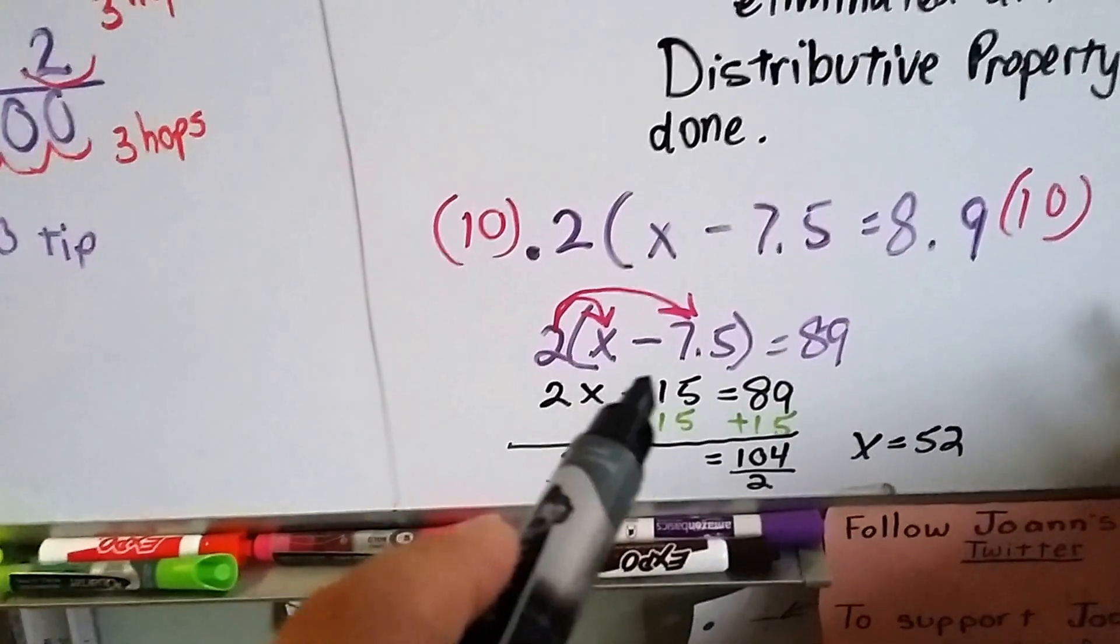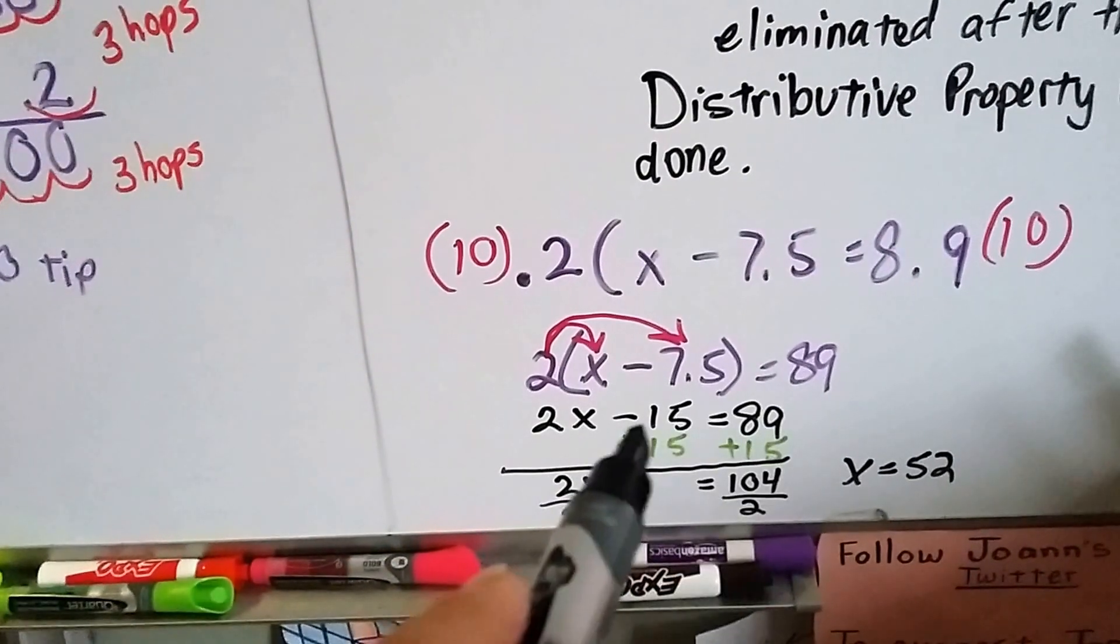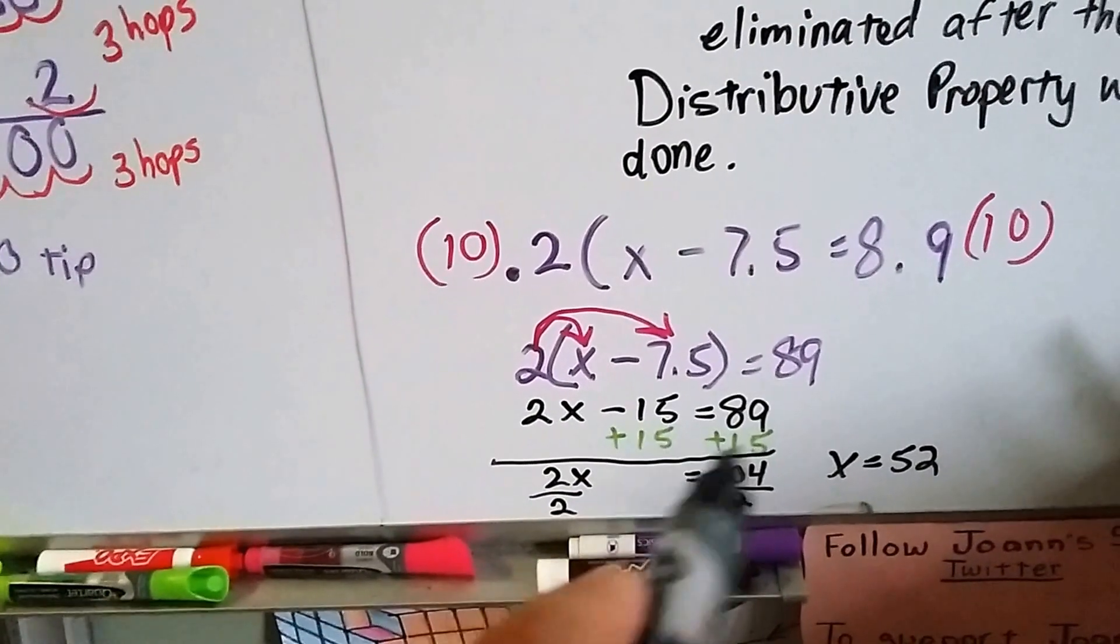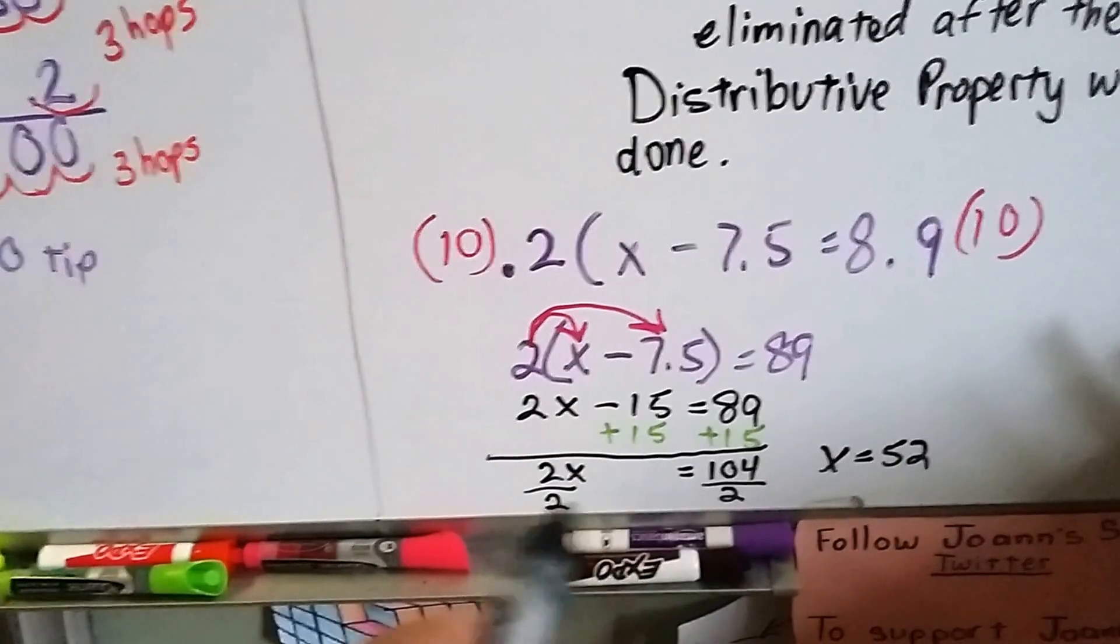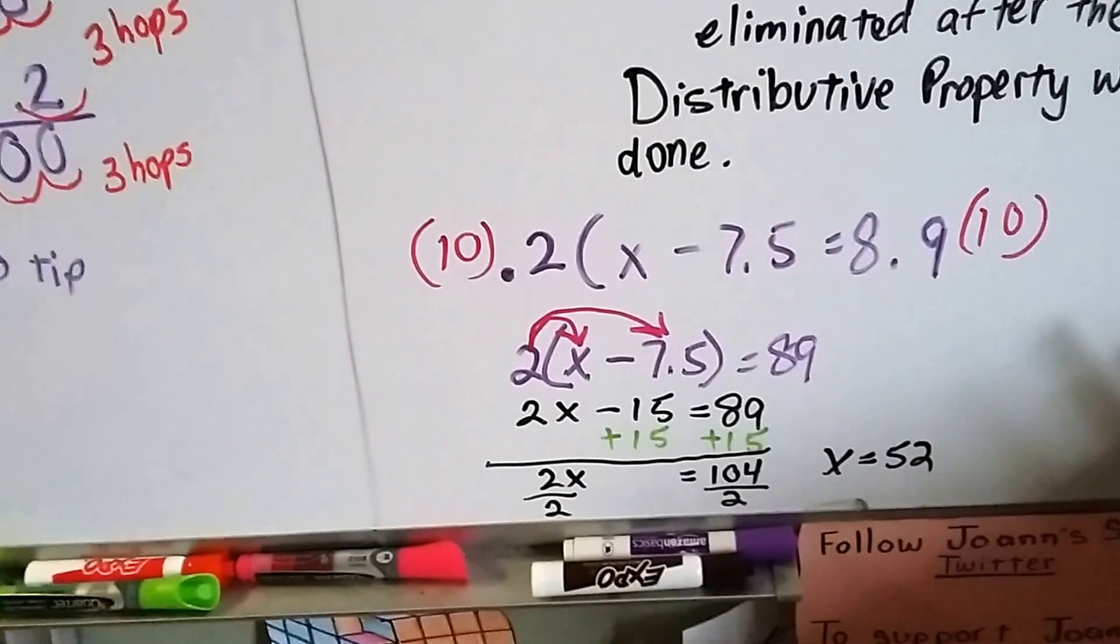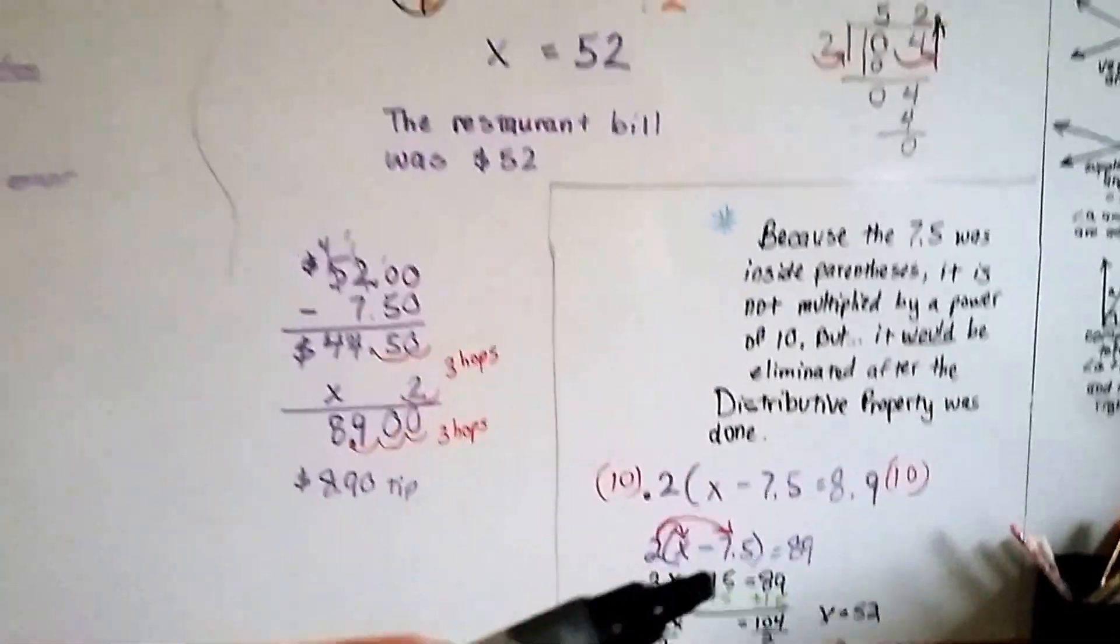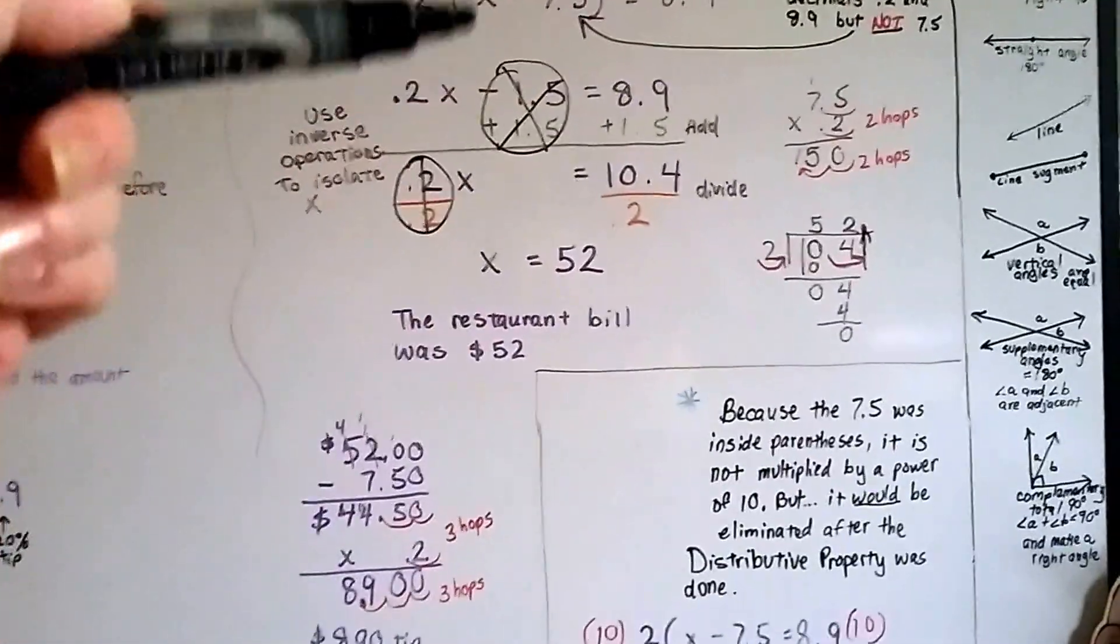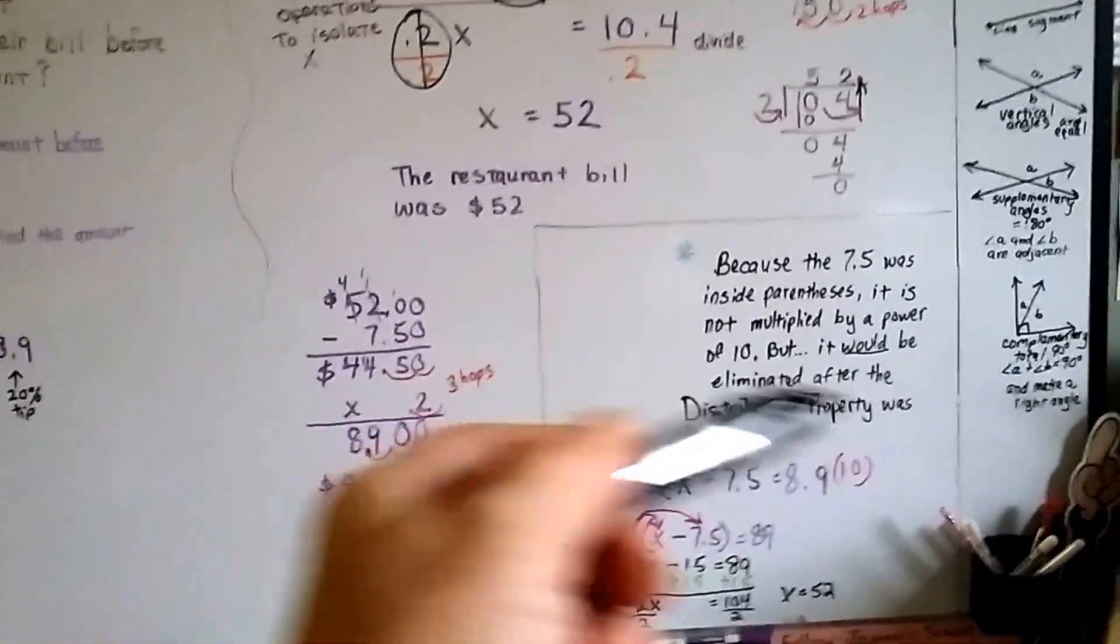Now we've got 2X minus 15 equals 89. And we add the 15 to both sides and we get 2X is equal to 104. Divide both sides by the 2 to make our friend the invisible 1 and we still get X equals 52. So we could have done it either way. And we did it just by doing decimals just to come straight down and do it. Or we could have multiplied by powers of 10.